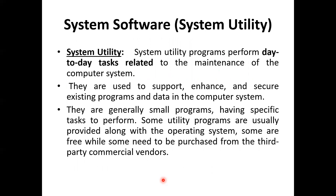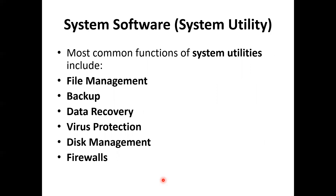The next level of system software is system utilities. System utility programs perform day-to-day tasks related to the maintenance of software and are used to support, enhance, and secure existing programs and data in the computer system. They are generally small programs with specific tasks to perform. Some utility programs are provided along with the operating system, while some are free and others must be purchased from third-party commercial vendors. The most common system utilities include file management, backup, data recovery, virus protection, disk management, and firewalls.